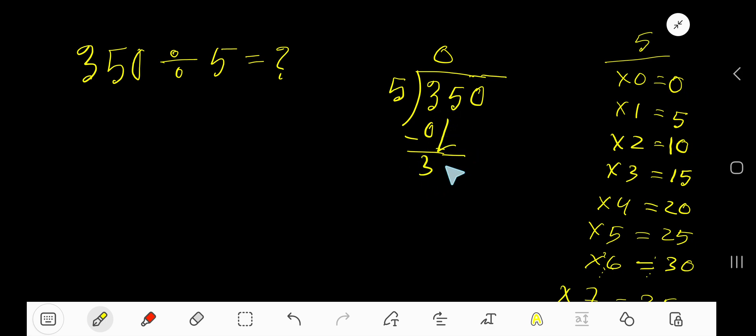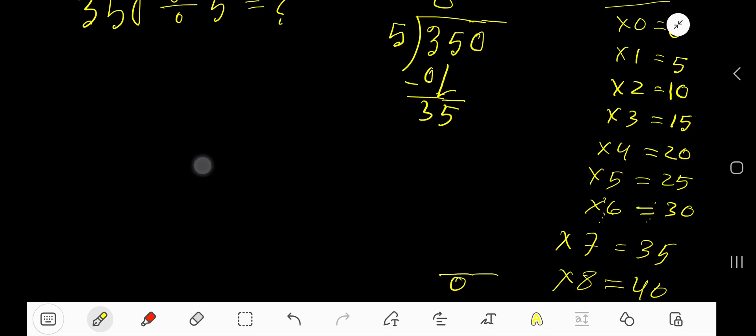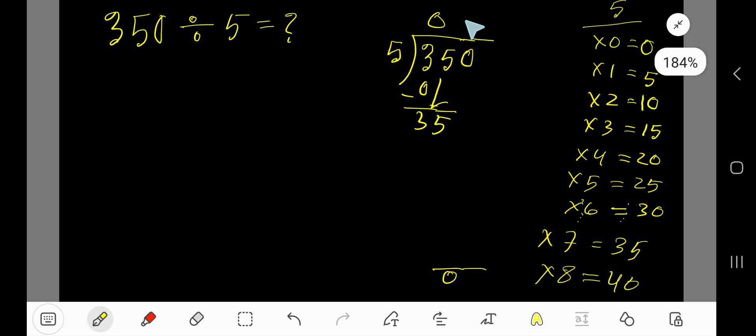Bring down the next digit, 5. 5 goes into 35 how many times? 5 goes into 35 seven times, so write 7.